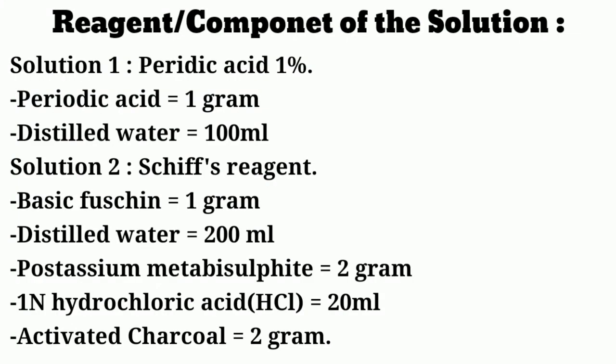Reagents and components of PAS stain: we use two solutions. Solution number 1 is also called periodic acid 1%. To make solution number 1 we need two things: periodic acid 1 gram and distilled water. Mix well and label with date. Solution number 1 is stable for 1 year.